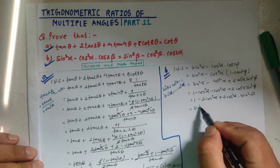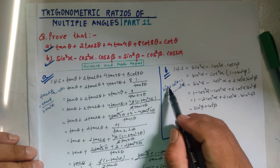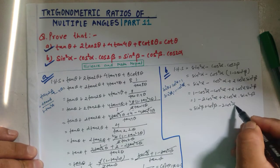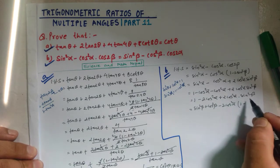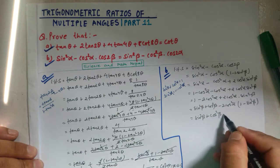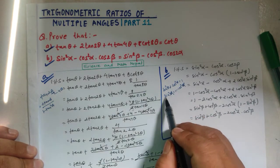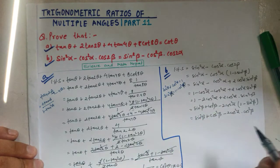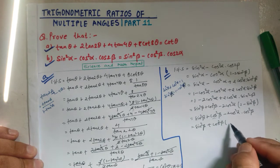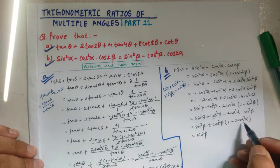Further, using sin² θ plus cos² θ equals 1, we substitute sin² α equals 1 minus cos² α. We get 1 minus cos² α minus cos² α plus 2 cos² α sin² β. Combining: sin² β plus cos² β minus 2 cos² α, using sin² β plus cos² β equals 1, simplifies further with 1 minus sin² β equals cos² β.